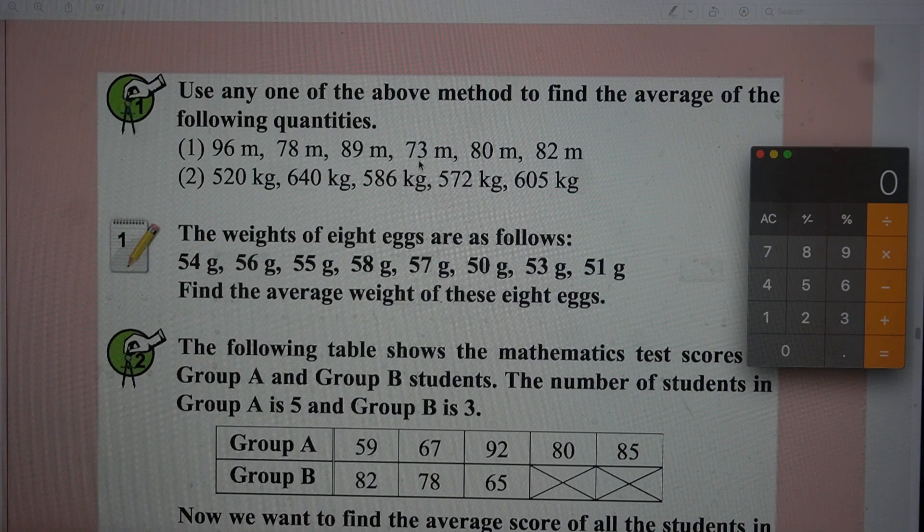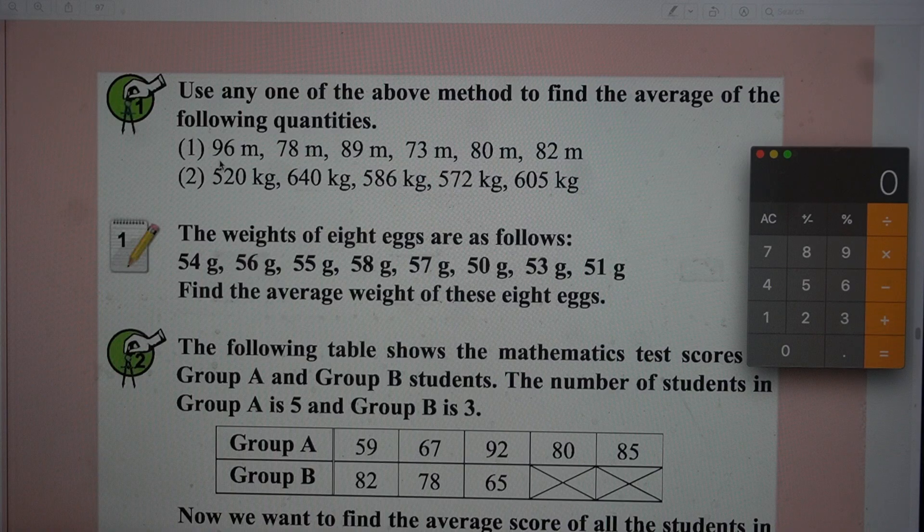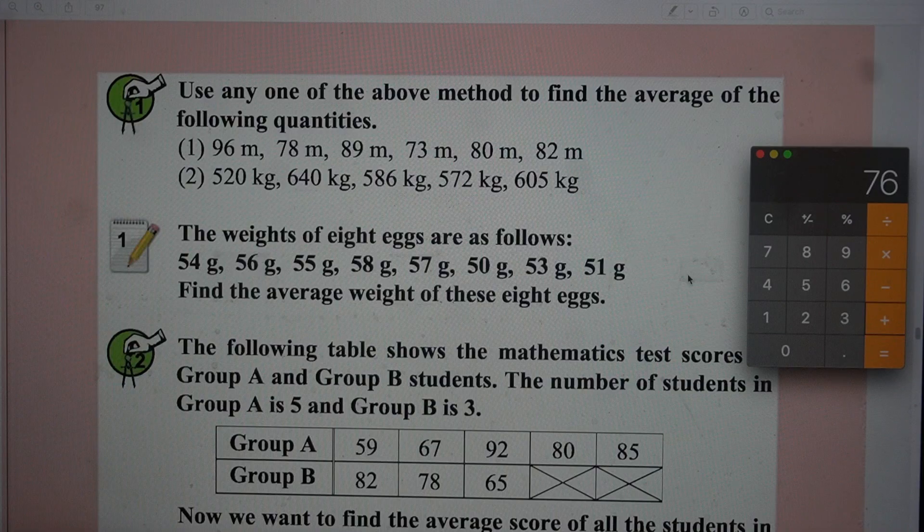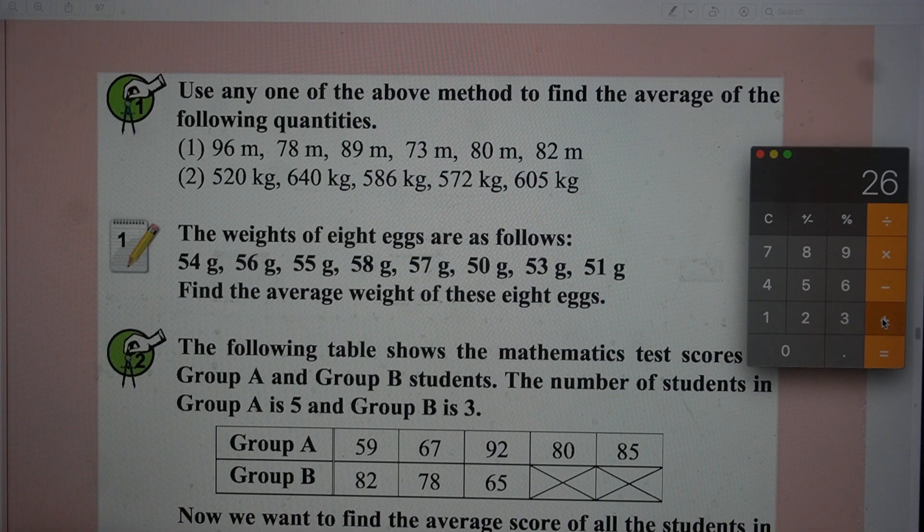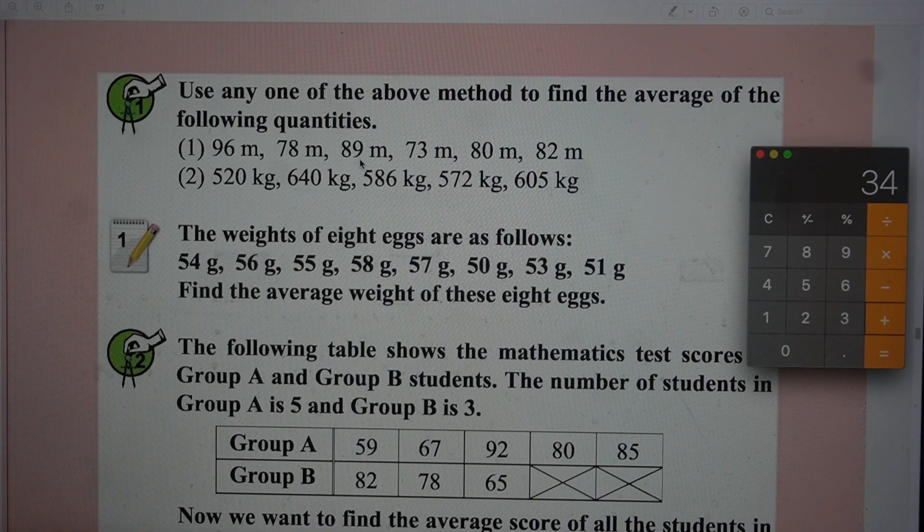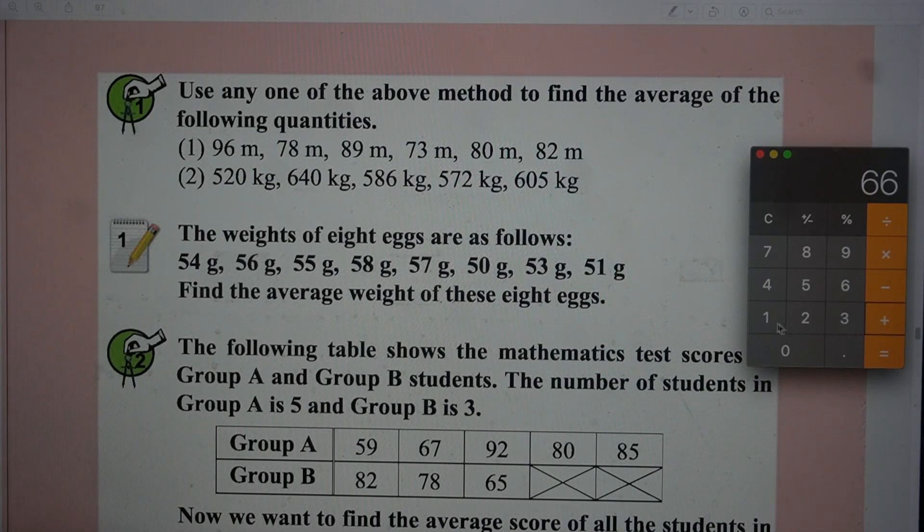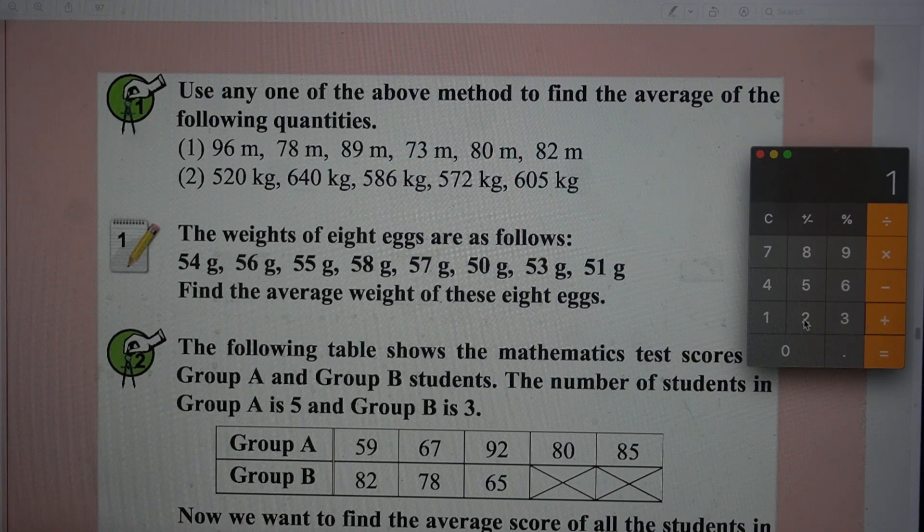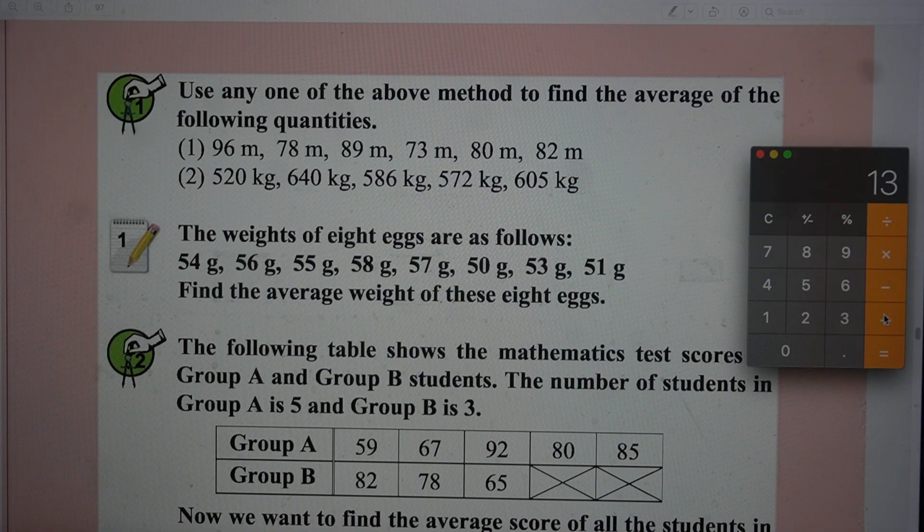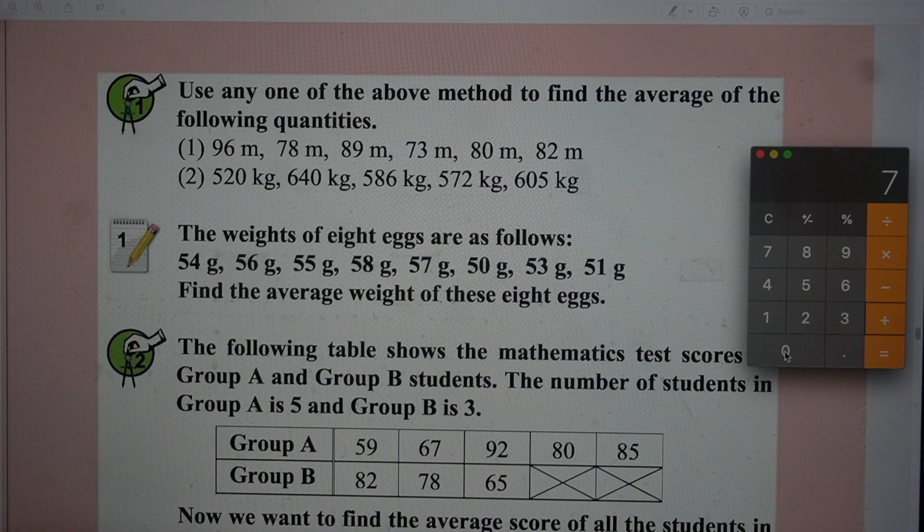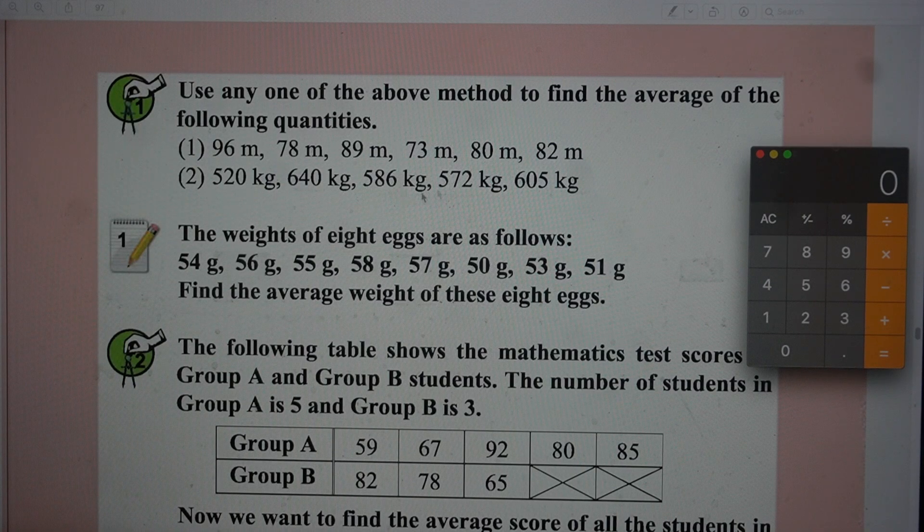See the least number is 73, so I will proceed with 70. If I subtract 70 from every number: first one I will get 26, second one 8, plus 19, plus 19, plus 3, plus 12, divided by 6. Total is 87 divided by 6 equals 13. 13 plus the number we subtracted, that is 70, so the average is 83. Similarly you can proceed with the second one.